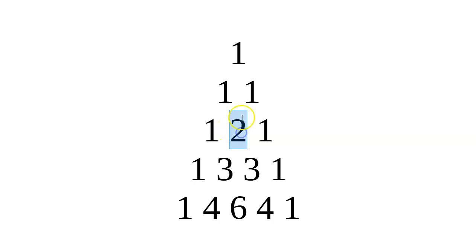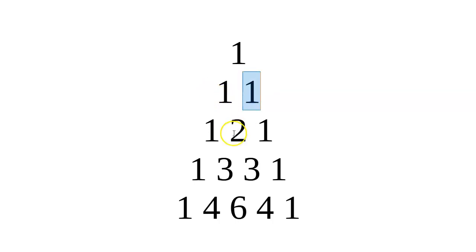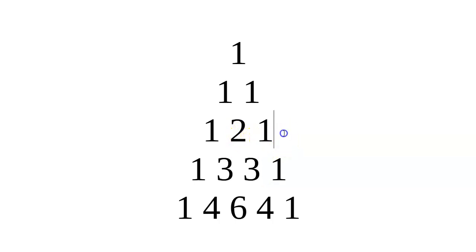For example, the two at row three column two is not column one and the column and row are not equal, so it's a recursive case. It equals the two numbers above it, both in the previous row. So for row three column two, we want row two column one and row two column two — the previous column and the same column. For instance, the three at row four column three needs row three column two and row three column three.